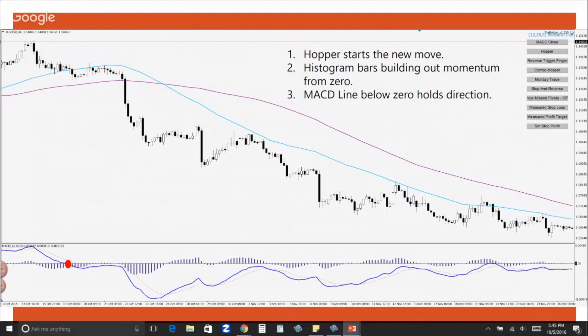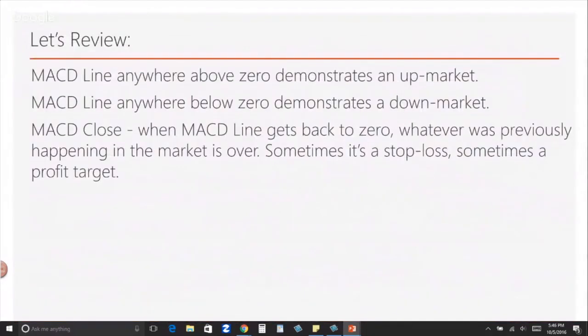That MACD line below zero held us in that downward direction for the duration of this downtrend. MACD line anywhere above zero demonstrates an up market — it doesn't matter if it's pointing down or dropping down, anywhere above zero demonstrates an up market. MACD line anywhere below zero demonstrates a down market.